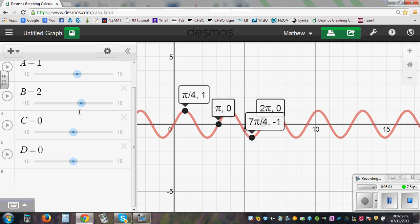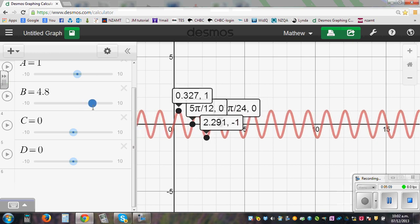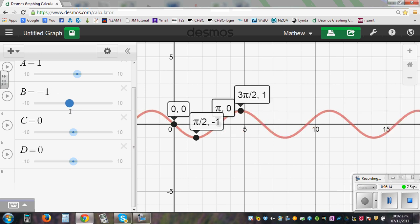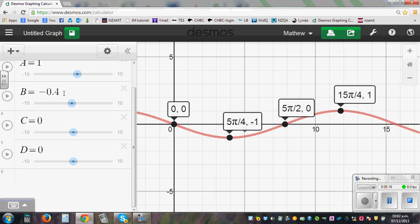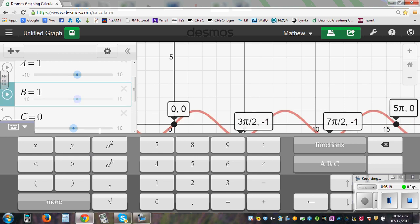So you can also move the slider and see what happens. As you move it, the number of cycles is increasing. And you can also go the other way. It becomes reflected. Let me make it 1 again.